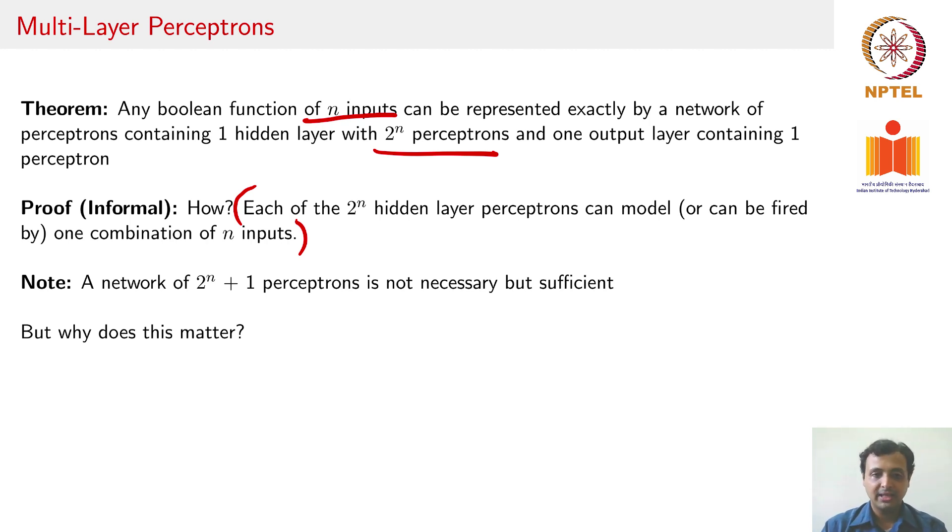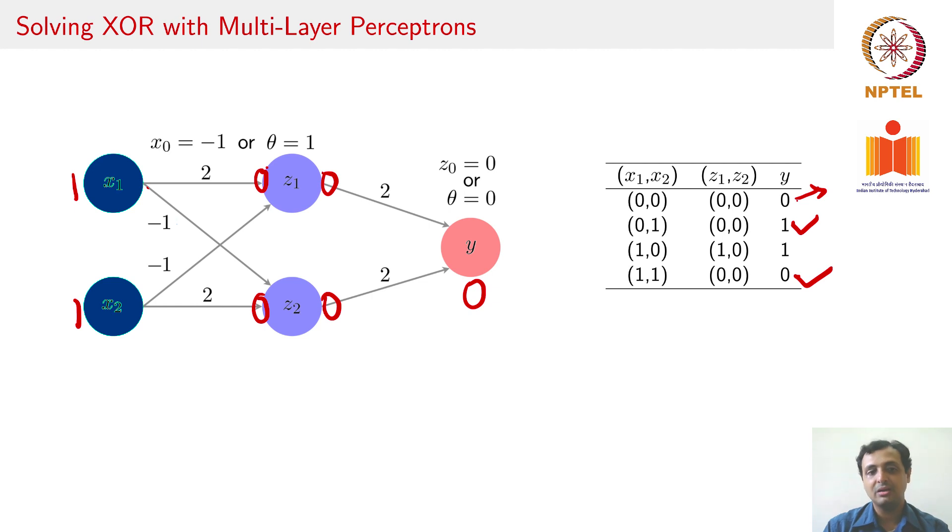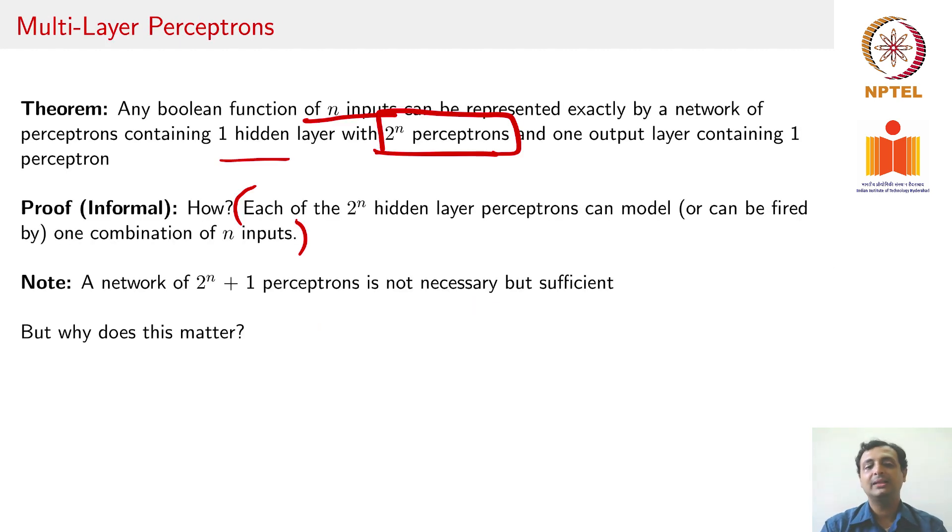But one thing to keep in mind here is why we say that any Boolean function can be implemented by a hidden layer with 2^n perceptrons. This is sufficient, but not necessary, which means you could solve a problem with less than 2^n neurons too. For example, we just now solved the XOR problem with a hidden layer with just 2 hidden neurons. Ideally, according to what we said, we should have needed 2^2 or 4 neurons, but that is not the case. That is the reason why we say that a network of 2^n + 1 plus 1 for the bias is not necessary when it is sufficient. You can probably find solutions with even less, but you can definitely find a solution with 2^n neurons or perceptrons in the hidden layer.